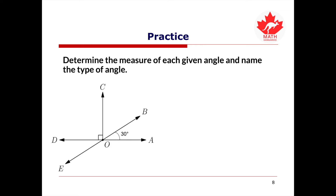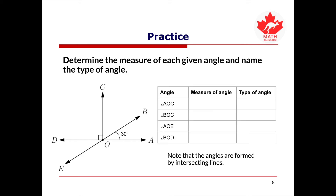Here is a practice problem to help you understand the concept of angles. In this diagram, we're given that angle AOB is equal to 30 degrees and angle COD is a right angle. Find the measure of angle AOC, angle BOC, angle AOE, and angle BOD, and name the type of angle they are. Please pause this video and try this question on your own.